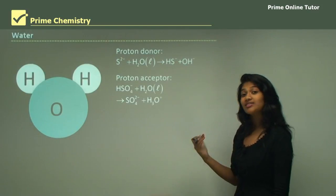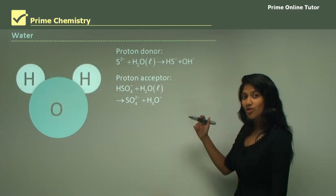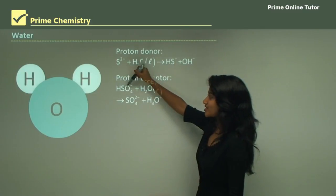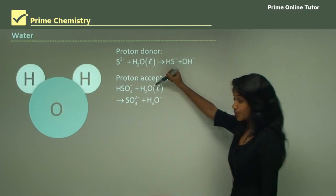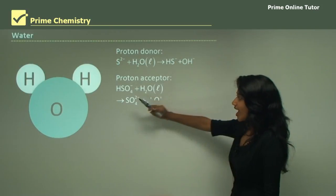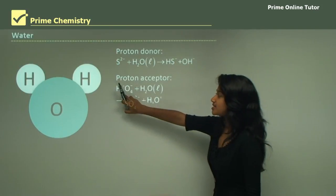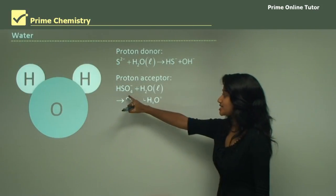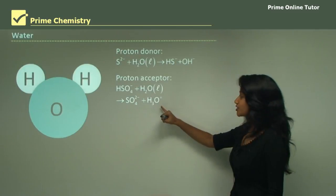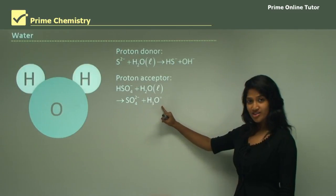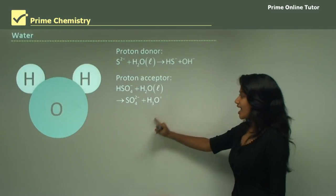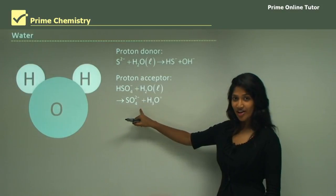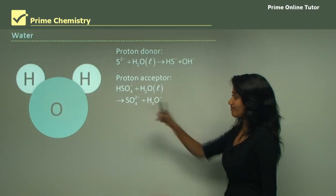Now, water acting as a base or proton acceptor: hydrogen sulfate reacts with water. What happens is the hydrogen from the hydrogen sulfate is going to be accepted by water to form a hydronium ion. And in that process, a sulfate ion is also produced.